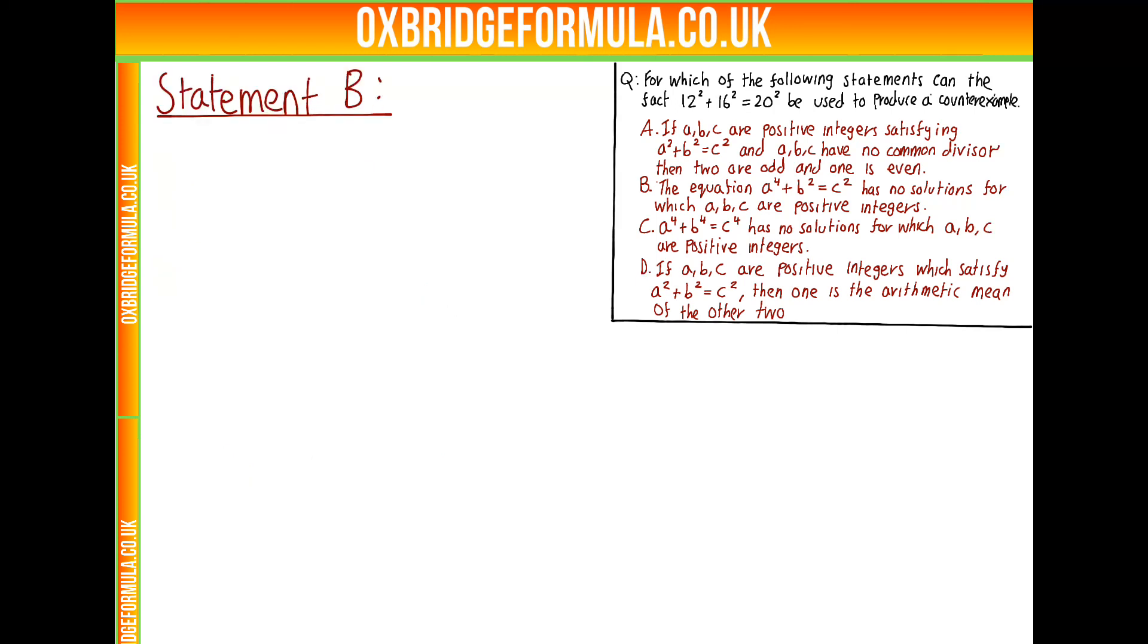Statement B: What would a counterexample look like? It would simply be A, B, and C so that this equation holds, with A, B, C positive integers. What we have is 12 squared plus 16 squared is 20 squared, which clearly isn't a counterexample in itself because nothing is to the power of 4.